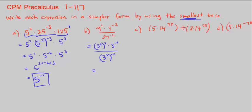3 squared squared is 3 to the 4th when we multiply the exponents. Then we still have 3 to the negative 3 divided by 3 cubed to the negative 2 power. We multiply the exponents to get 3 to the negative 6. When we multiply terms with the same base, we add the exponents, so 3 to the 4th times 3 to the negative 3 is 3 to the 1, over 3 to the negative 6.